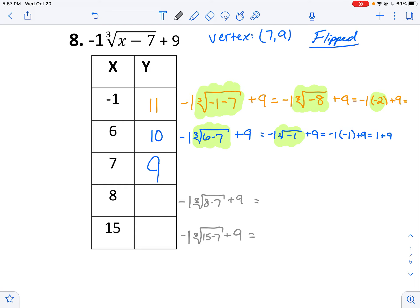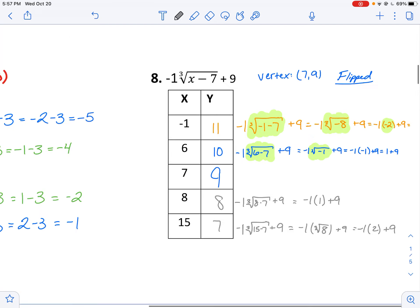Okay, so you should be done by now. Otherwise, pause the video. And this would be negative 1 times 1 plus 9 is 8. And this would be negative 1 times the cube root of 8. So negative 1 times 2 plus 9 is 7.